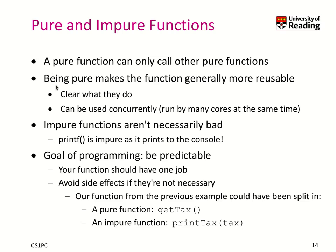Pure functions are more reusable because it's clear what they do, and you can use them concurrently. That means in a parallel program with many threads operating in your code, calling this function many times will not change the result. It also doesn't mean that impure functions are bad — printf, for example, is impure as it prints to the terminal, but it's a very versatile and useful function. Our goal as programmers should be to have predictable code: functions should have one job and avoid side effects if they are not necessary — they should be pure if possible.